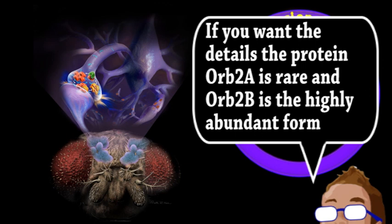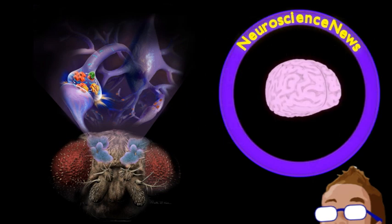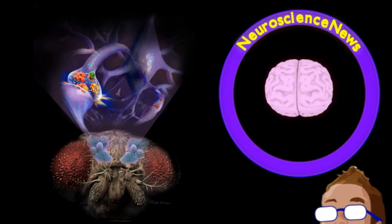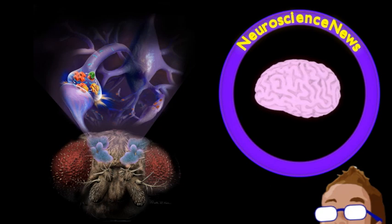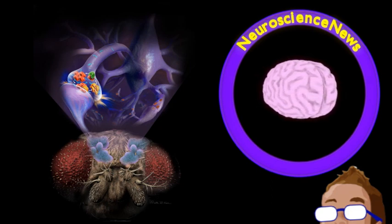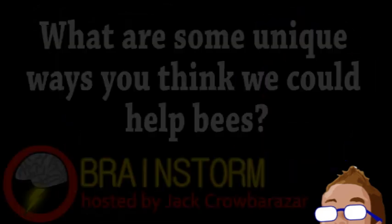Since one form of the protein is so unstable, the cell can activate the system precisely in time and space using a completely separate protein that stabilizes the rare form of ORB2. It will be a lot more work to study these mechanisms in more complex animals, but equivalent proteins have already been found in mammals including mice and humans.